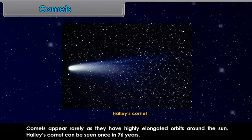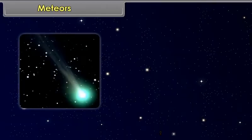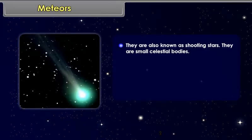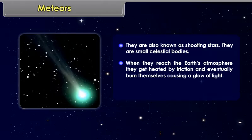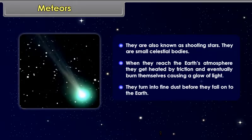Meteors. They are also known as shooting stars. They are small celestial bodies. When they reach the Earth's atmosphere, they get heated by friction and eventually burn themselves, causing a glow of light. They turn into fine dust before they fall onto the Earth.